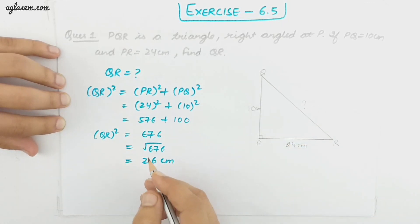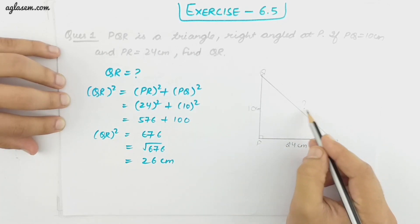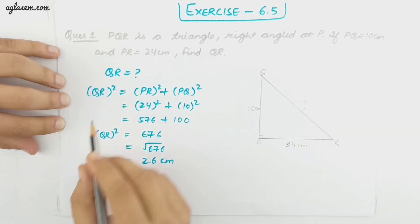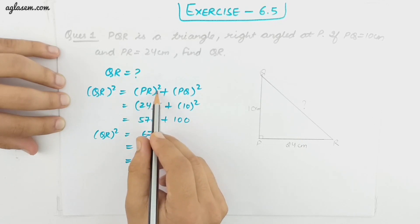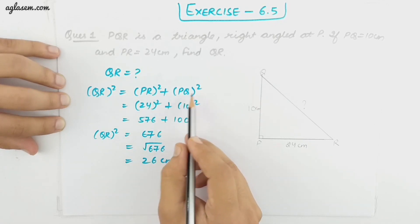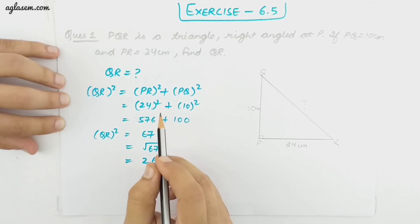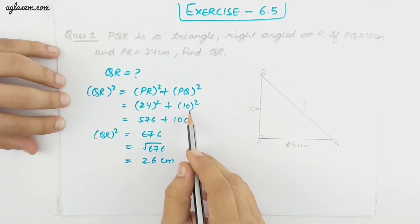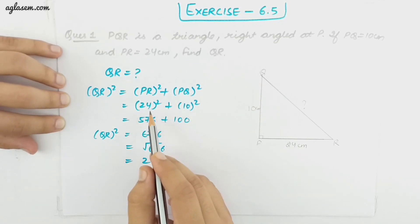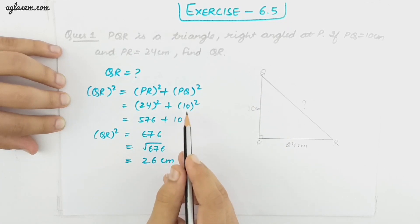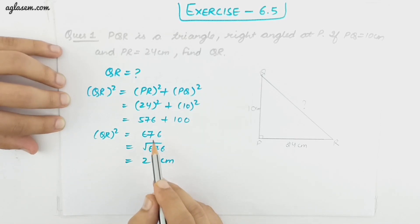What is Pythagoras property? The sum of the squares of two sides will be equal to the square of the third side, which is the hypotenuse. So QR square equals PR square plus PQ square. 24 multiplied by 24 gives 576, and 10 multiplied by 10 gives 100. So QR square is 676.